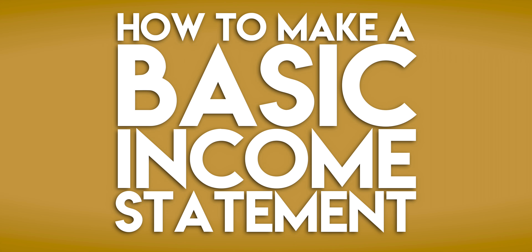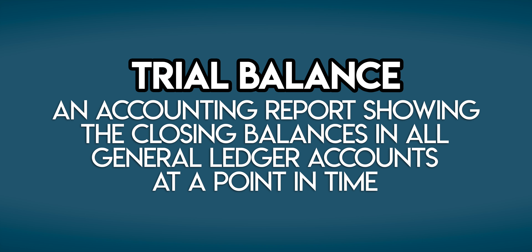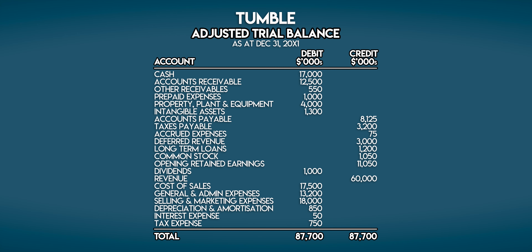How do you make a basic income statement? The first thing you'll need is a trial balance — an accounting report showing the closing balances in all general ledger accounts at a point in time. Here's one for a dating app called Tumble. It's an adjusted trial balance, which means that all of Tumble's adjusting entries have already been posted, and it was run on December 31st, which happens to be the end of Tumble's financial year.